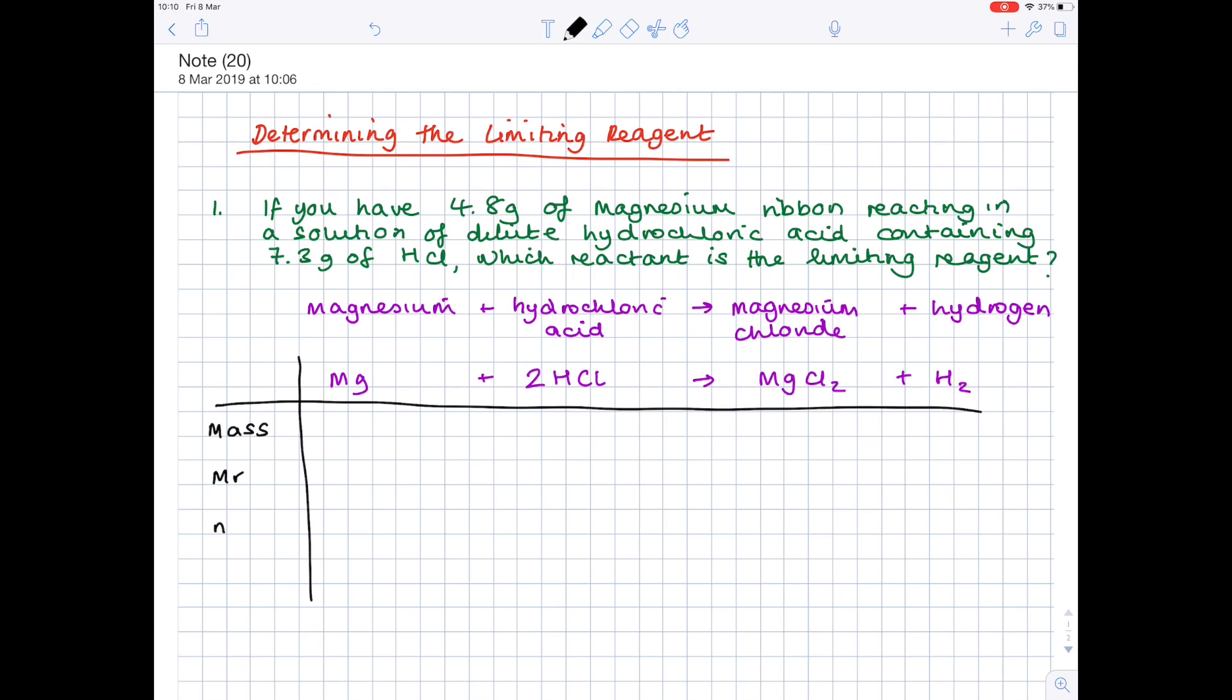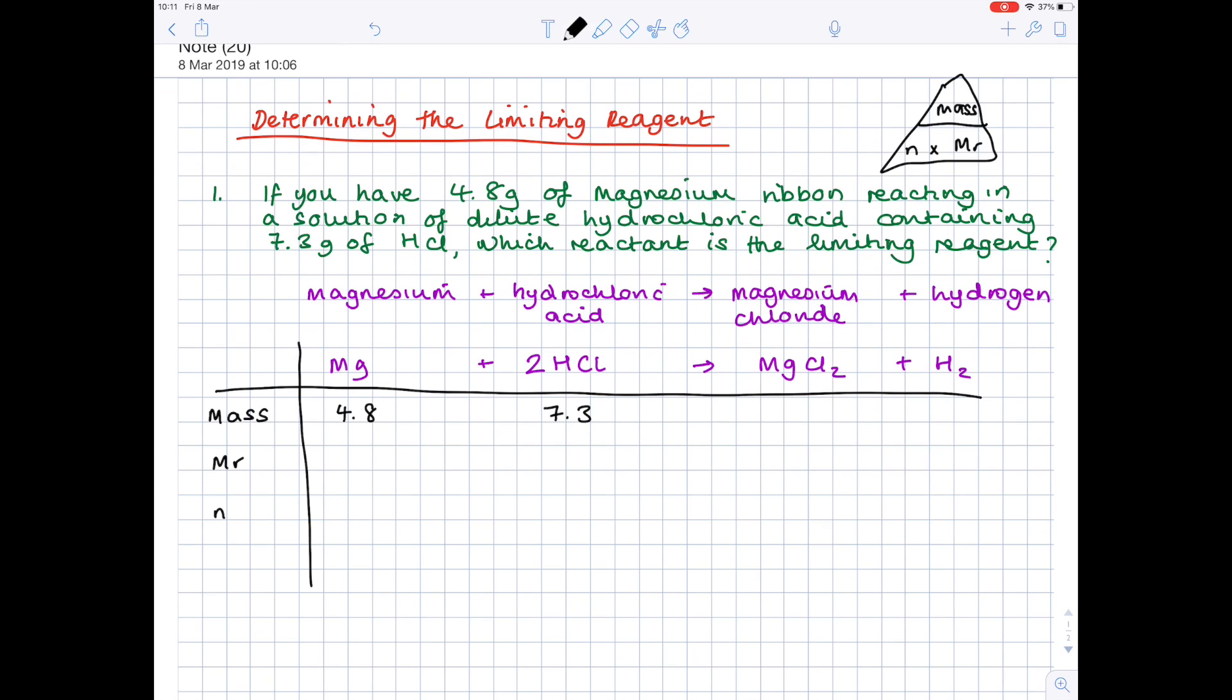Now we're trying to determine which of the two reactants is the limiting reagent. So we're going to start by writing down the information we know from the question. So we know we've got 4.8g of magnesium, and we know that we have 7.3g of hydrochloric acid. And once you've entered the masses into the periodic table, you can now enter the MRs, which you get from the periodic table. So magnesium has a mass of 24.305. Hydrochloric acid is going to be hydrogen, which is 1, plus chlorine, which is 35.45, which gives you a total of 36.45.